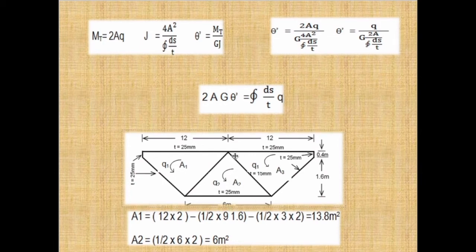The area of the triangular loop — panel 2 — is half into base 6 meters into height 2 meters, giving 6 square meters. So we have found the areas: panel 1 area is 13.8 m² and panel 2 area is 6 m².